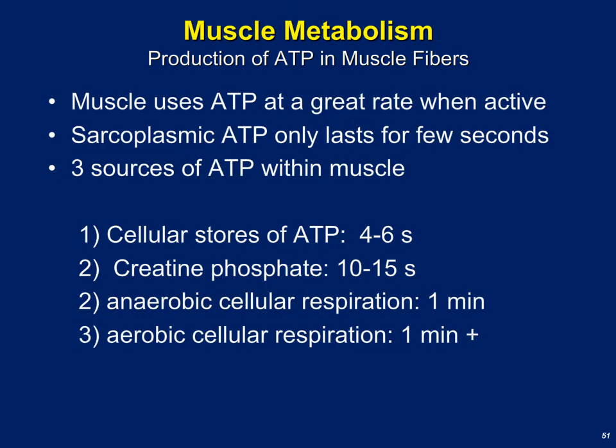Now we'll discuss muscle metabolism — the process muscles use to extract energy from food molecules. Muscles are metabolically expensive and have a lot of mitochondria to convert food into ATP. Muscles run on ATP but only have about 4 to 10 seconds of ATP on hand. Once that's used up, they rely on other energy sources: creatine phosphate, then anaerobic metabolism, then aerobic metabolism.